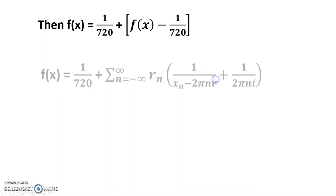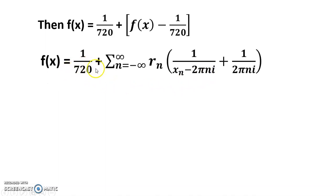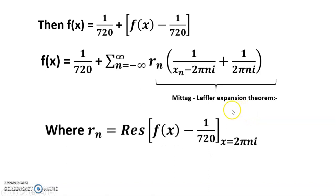And f(x) equals 1/720 plus summation n equals minus infinity to infinity, n≠0, of residue at 2πni times (1/(x-2πni) + 1/(2πni)) by the Mittag-Leffler expansion theorem. And where rn equals f(x) minus 1/720 at x equals 2πni, and that value is 1/(8π³n³).